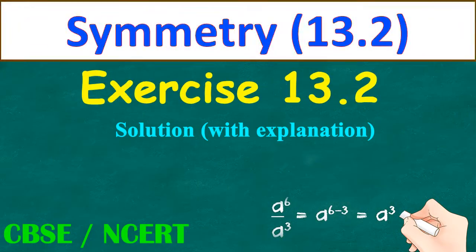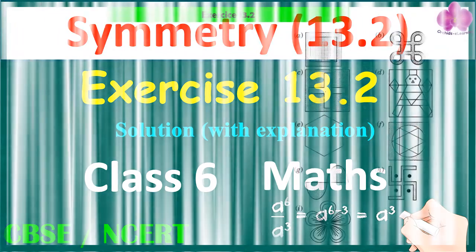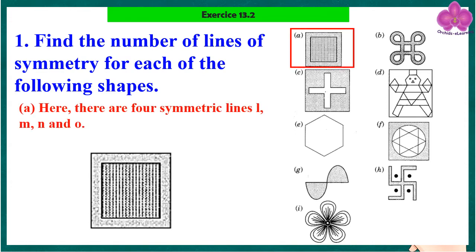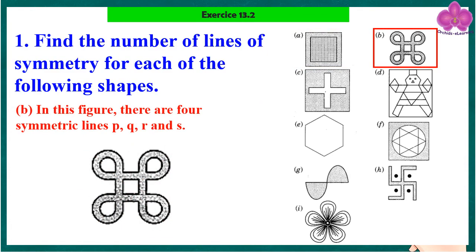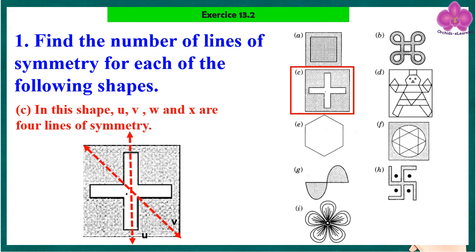Exercise 13.2, Class 6 Maths, Question 1: Find the number of lines of symmetry for each of the following shapes. In the first figure, there are four lines of symmetry: L, M, N, and O. In the second figure, there are four lines of symmetry: P, Q, R, and S. In the third shape, U, V, W, and X are four lines of symmetry.